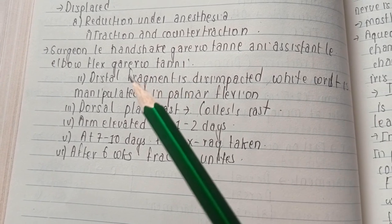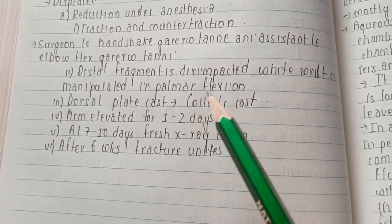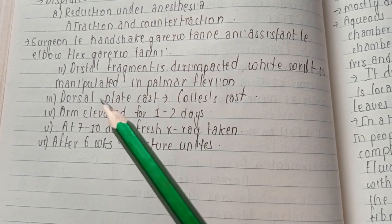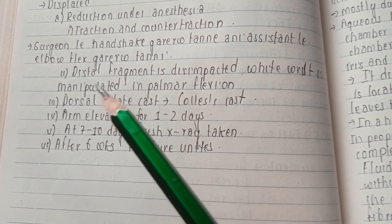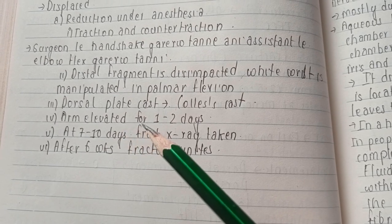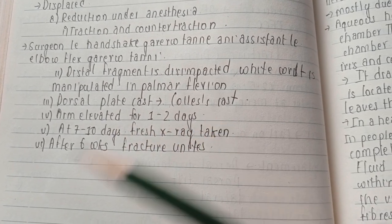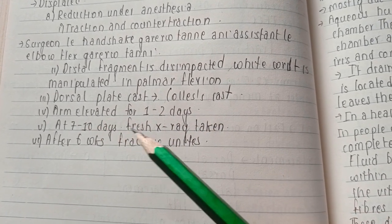With wrist manipulated in palmar flexion, dorsal plaster cast is used, also known as Collis cast. The arm must be elevated for one to two days, and at seven to ten days x-ray is taken.